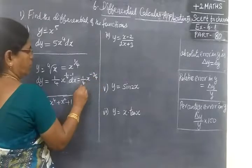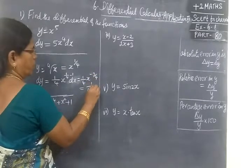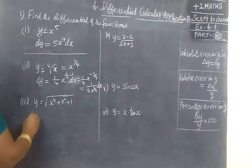So minus 3 by 4, you bring it to the denominator. So 1 by 4 x power 3 by 4 dx.